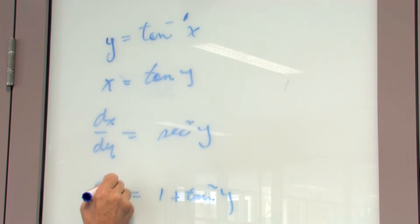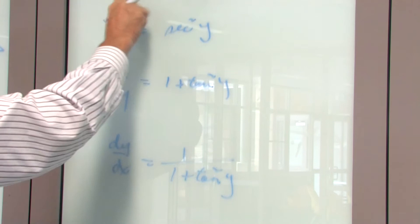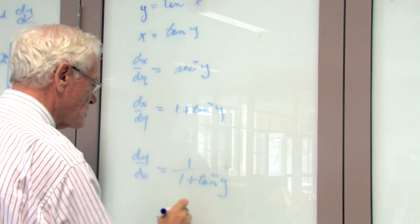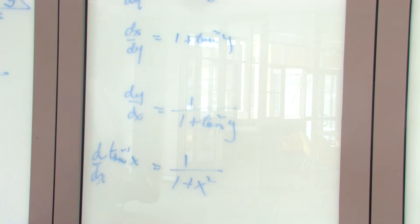Since it's the inverse, dy/dx equals 1 over 1 plus tan²(y). Now, where does tan²(y) come from? Well, x equals tan(y), so tan²(y) must equal x squared. So the derivative of arctan(x) with respect to x is 1 over 1 plus x squared.